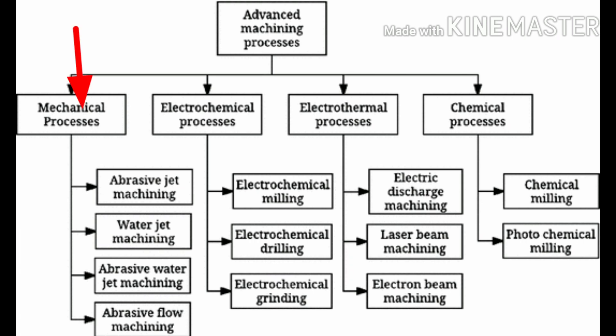The first type is mechanical advanced machining processes. In mechanical types there are four processes: abrasive jet machining, ultrasonic machining, water jet machining, and abrasive water jet machining. In mechanical type processes, we use shear forces or external pressurized fluid for machining purposes.